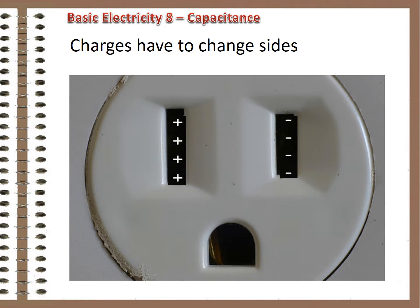When the polarity switches, all the negative charges have to run around the circuit to the other side in order to make it positive, and vice versa for the positives. It's like there's a reservoir of charges trying to keep that side of the circuit the way it was, while the source generator is trying to change it.